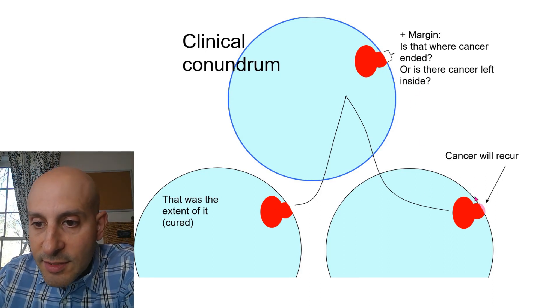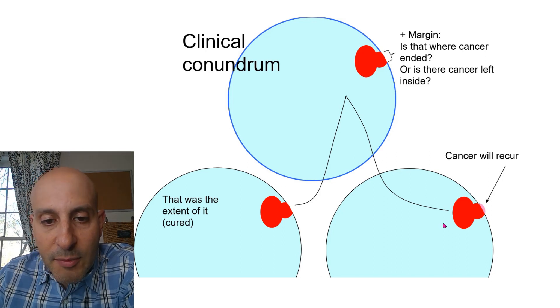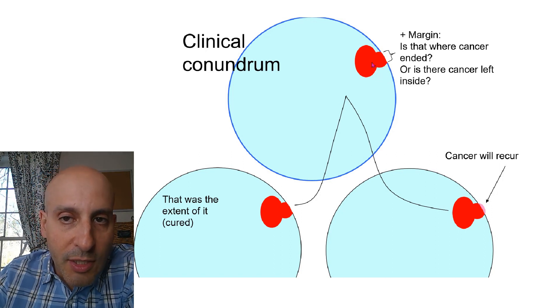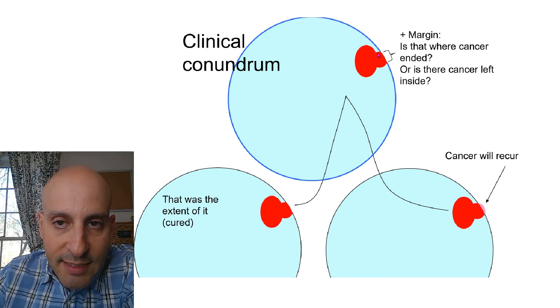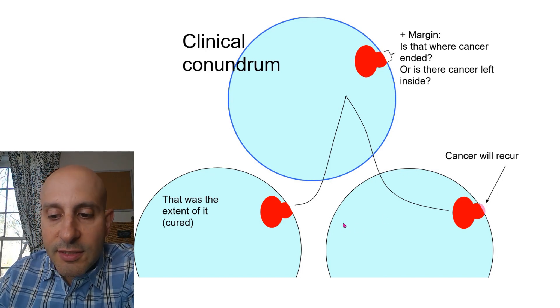Or is there still some cancer left inside? Meaning a little crescent of prostate cancer cells is still in the patient. That's the sort of unknown when we have a positive margin. We don't always know if that's the extent of it, that's as far as it went but it touched the edge, or it was the tip of the iceberg and some microscopic cancer cells are still inside.